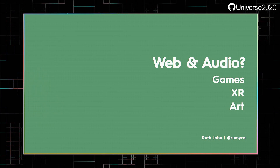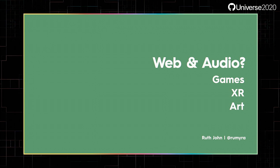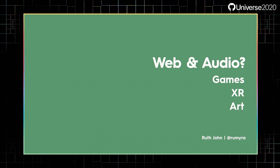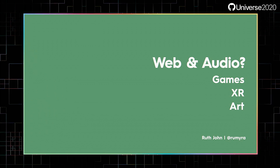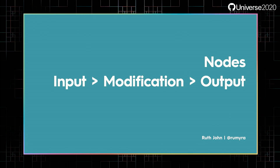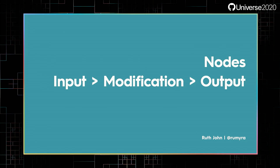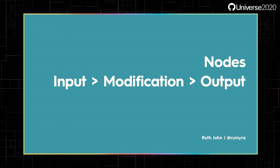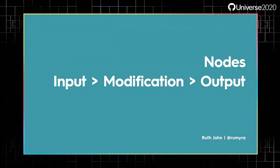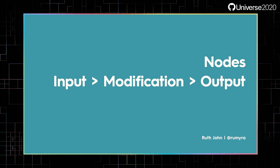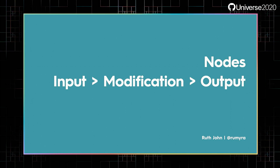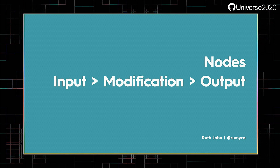There's a lot of functionality within the Web Audio API. I have 10 minutes of your time, so I'm going to give you a quick demonstration. One thing to understand about the API is it works around the concept of nodes. Each bit of functionality is a node. There are input nodes — ways of loading or creating sounds. There are modification nodes; you can adjust volume, apply filters, add echo or spatialization, and even analyze the sound. Then there are output nodes. By default, the sound is output to the speakers, but you can also output to buffers and files.